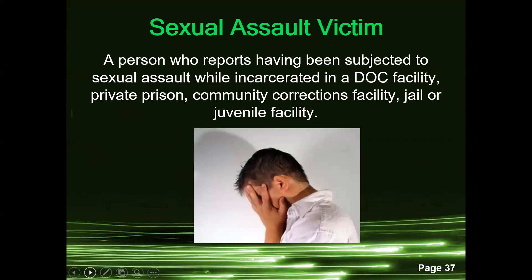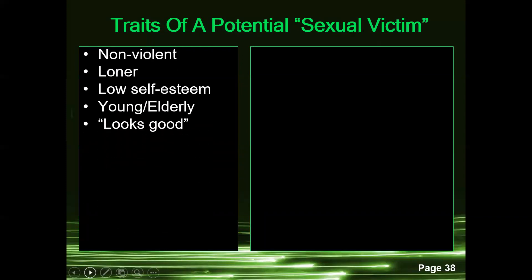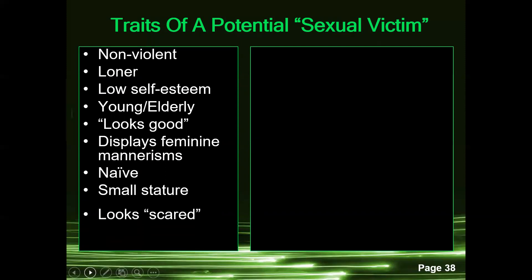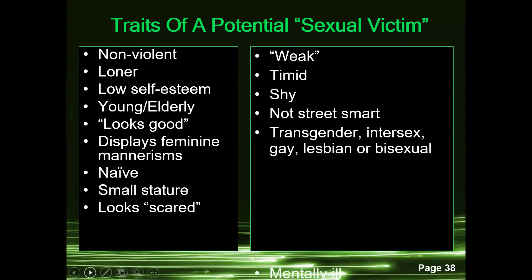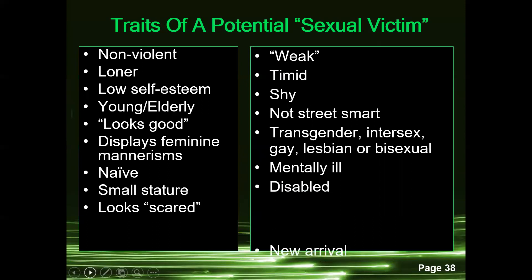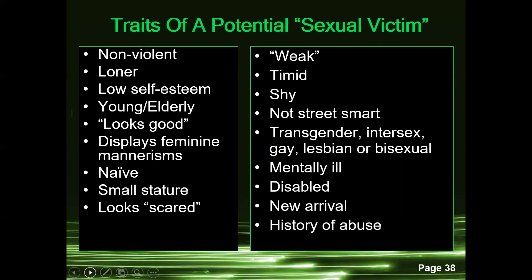A sexual assault victim is defined as a person who reports having been subjected to sexual assault while incarcerated in a DOC facility, private prison, community corrections facility, jail, or juvenile facility. Traits of a potential sexual victim include being nonviolent, a loner, having low self-esteem, being young or elderly, displaying feminine mannerisms, naive, small-statured, scared, weak, timid, shy, not street smart, transgender, intersex, gay, lesbian, bisexual, mentally ill, disabled, a new arrival, or having a history of abuse.